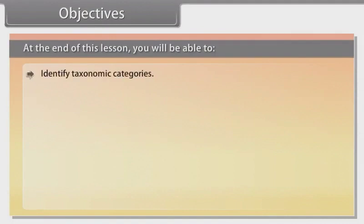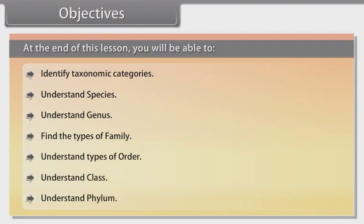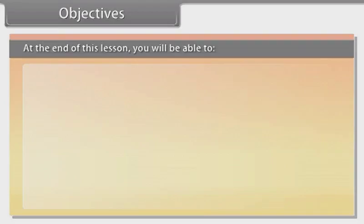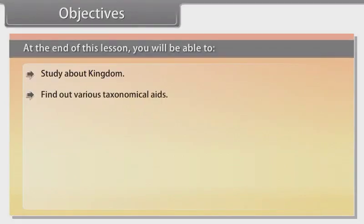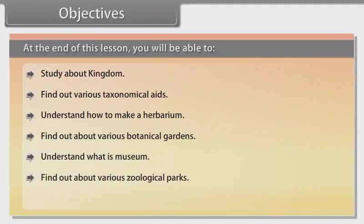At the end of this lesson you will be able to: identify taxonomy categories, understand species, understand genus, find the types of family, understand types of order, understand class, understand phylum, study about kingdom, find out various taxonomical aids, understand how to make a herbarium, find out about various botanical gardens, understand what a museum is, find out about various zoological parks, and understand what a key is.